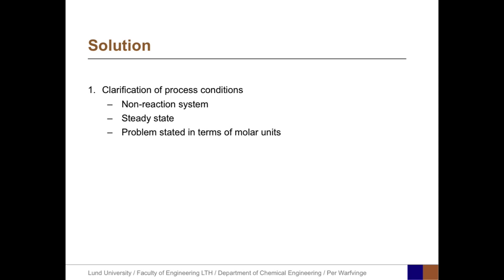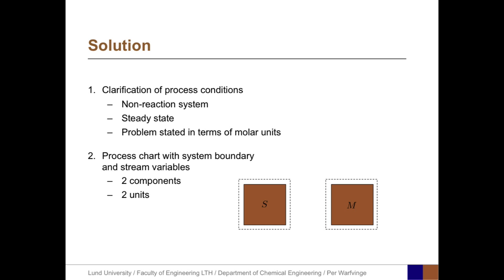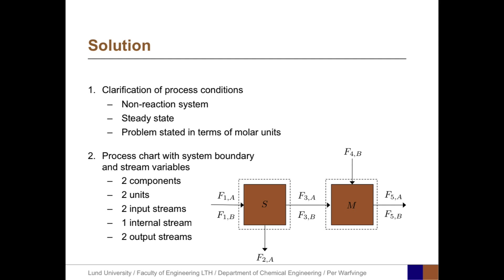The first step is to clarify the process conditions. In this case, we have a non-reacting system at steady state, and the problem is stated in terms of molar units. The process chart with system boundaries and stream variables is then created. We have two components and two units, two input streams (streams 1 and 4), one internal stream (stream 3), and two output streams (streams 2 and 5), each containing components A and B.